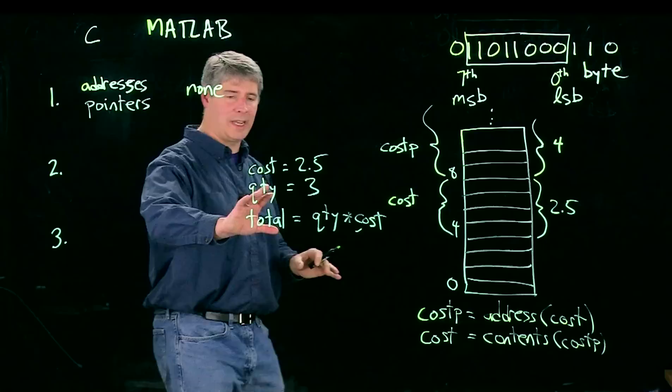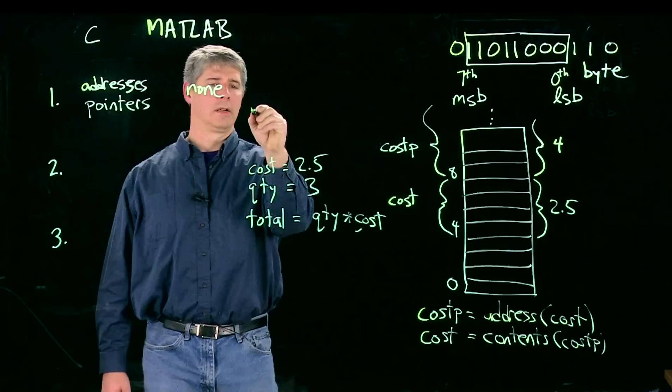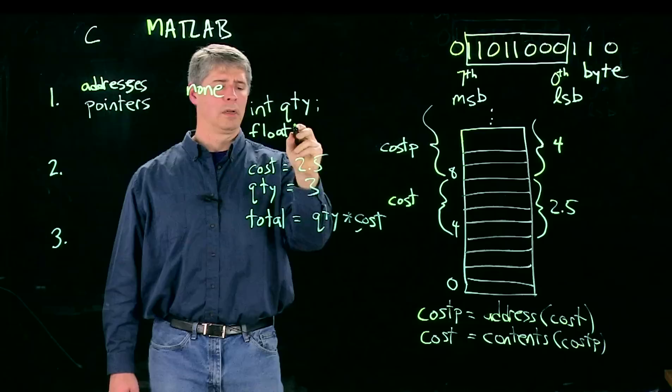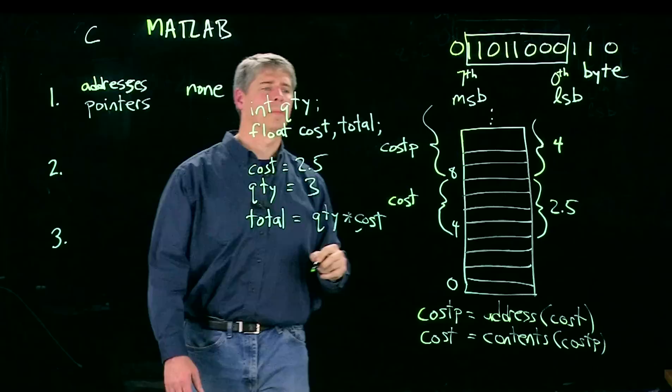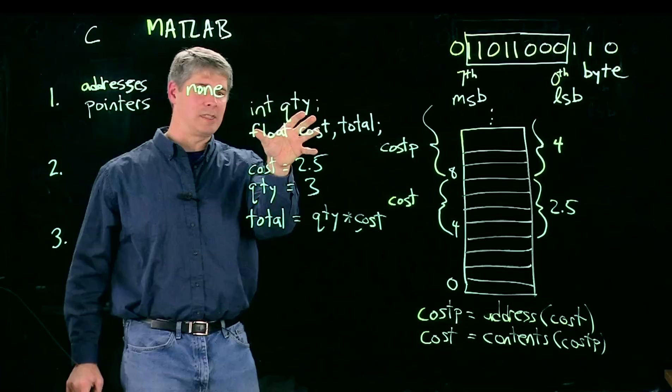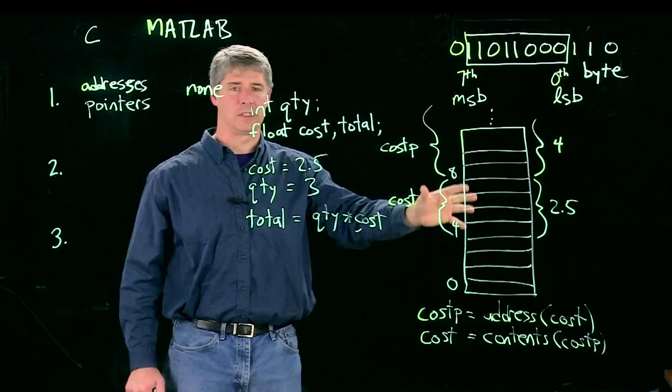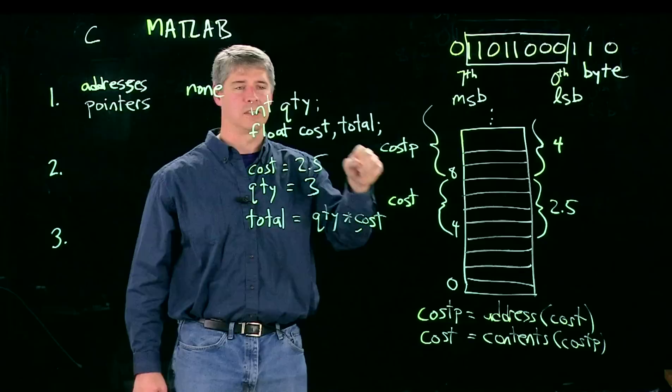In C, I can't do that. Before I ever write any of this, I had to define the variables. I'd have to say int quantity and float cost total. These commands here are actually defining the variables. They say, I'm going to use a variable called quantity, and I'm going to use a variable called cost and a variable called total. And quantity is going to be an integer, and cost and total are going to be floating point numbers. And when I do that in C, it tells the compiler, set aside space in memory to hold these variables. And also, I'm going to tell you now how to interpret the zeros and ones at those locations in terms of an integer or as a floating point number. So you have to define your variables first before you ever use them.